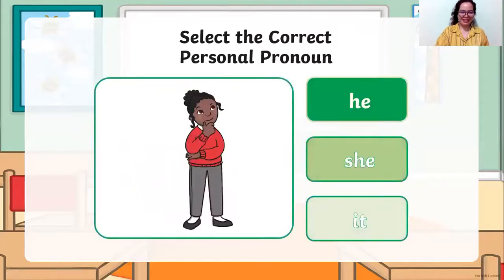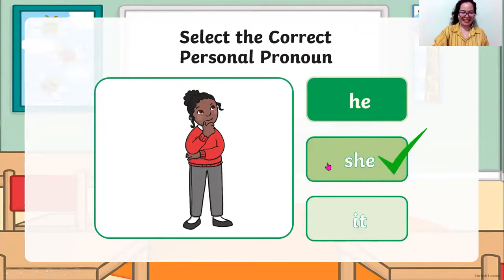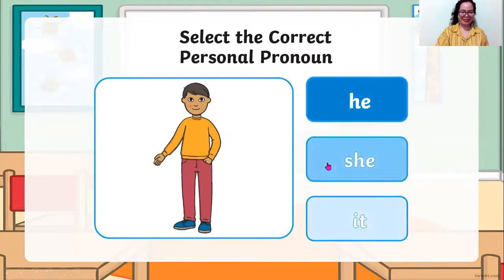Next. Girl — we are going to use the personal pronoun she. She is a girl. Next. Boy — he, she, or it? The answer is he. He is a boy.